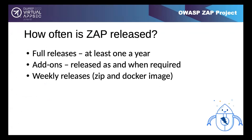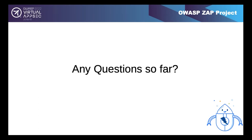There are weekly releases - a zip file and a weekly Docker image - and also a live Docker image that's updated daily. Occasionally someone reports a problem via IRC and the team has been able to fix and release it via the live Docker image within an hour - not promised every time, but it has happened more than once. Simon wraps up the general ZAP overview and asks if there are any questions so far.